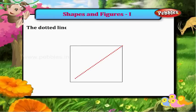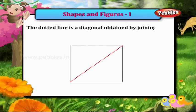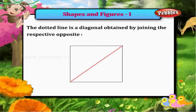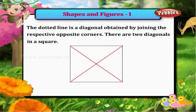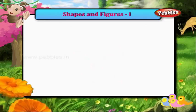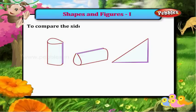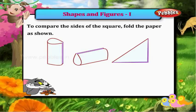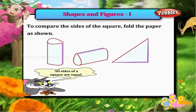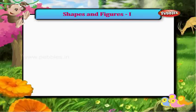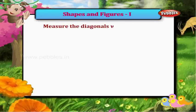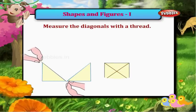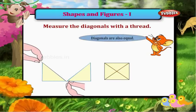The dotted line is a diagonal obtained by joining the respective opposite corners. There are two diagonals in a square. To compare the sides of the square, fold the paper as shown. All sides of a square are equal. Measure the diagonals with a thread — the diagonals are also equal.